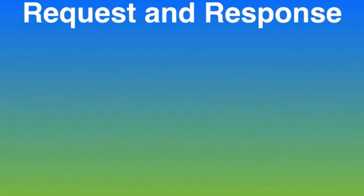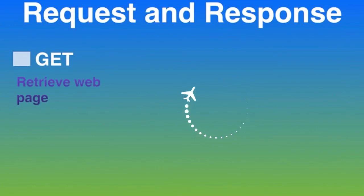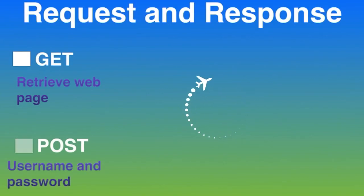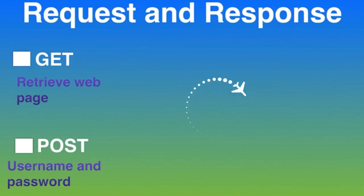HTTP is a request and response type protocol. Requests include two major types: GET and POST. A GET request is used to retrieve a web page, while a POST request is used to submit information like a username and password. Responses include a status code and a status message. The status code indicates whether the request was successful or not.